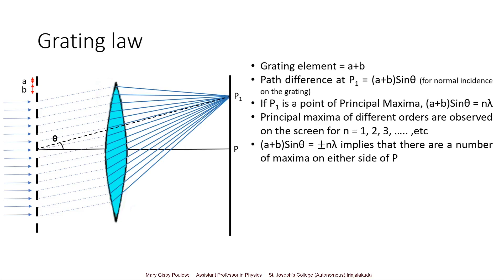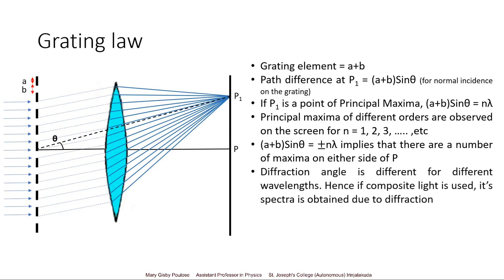The plus or minus indicates that there are principal maxima on both sides of central point P. The diffraction angle is different for different wavelengths. Only for a particular wavelength have we defined this equation: path difference equals nλ. Depending on λ, theta will vary. Hence if we use composite or white light, its spectrum is obtained due to diffraction and its different components are obtained on the screen.